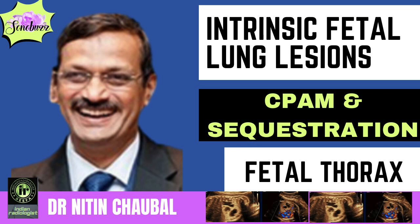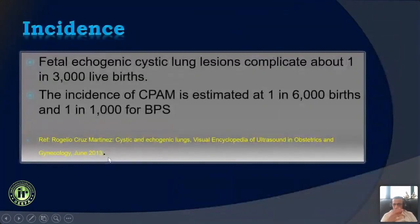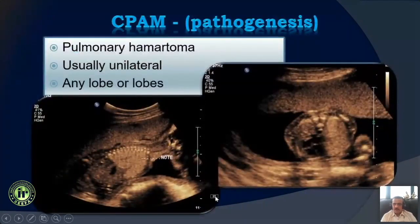We had intrinsic lung lesions where we have CPAMs, or congenital pulmonary airway malformation, bronchopulmonary sequestration, and hybrid lesions. Very often it becomes difficult to differentiate one from the other. Overall, if you look at ecogenic and cystic masses, the incidence is about 1 in 3000.